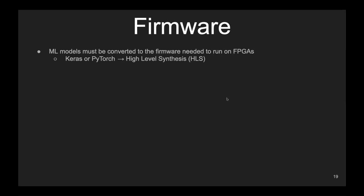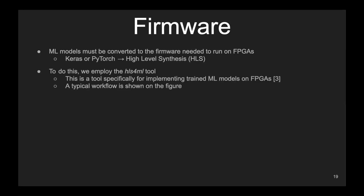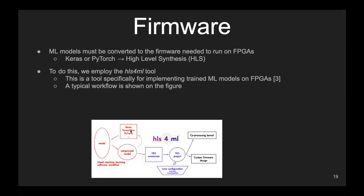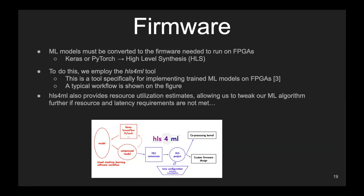Machine learning models must be converted to firmware to run on FPGAs. Common Keras or PyTorch models are converted to high-level synthesis, or HLS, using the HLS4ML tool — specifically for implementing trained machine learning models on FPGAs. A typical workflow: you have your algorithm in Keras, TensorFlow, or PyTorch; you tweak the model; then do the HLS conversion; and after that it is ready for the coprocessor kernel and custom firmware design. HLS4ML also provides resource utilization estimates, allowing us to tweak our machine learning algorithm if resource and latency requirements are not met.